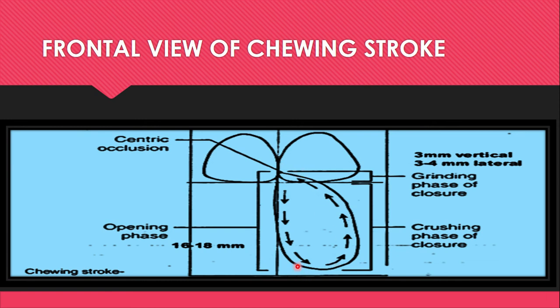As the teeth approach each other, the lateral displacement which was 5 to 6 mm decreases to 3 to 4 mm and the jaw occupies the lateral starting position. This completes the opening phase. In the closing phase, we have the grinding phase and the crushing phase of the closure.